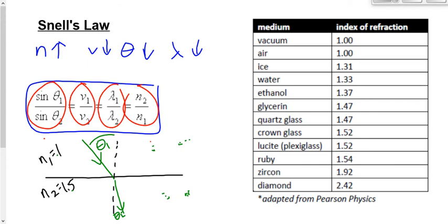Finally, there's a table of values for the index of refraction of various materials. You don't need to memorize that table — you're given only one of those indices on your data sheet. If you need another value, it will be given to you in the question, probably buried in a page of information like 'use the following information to answer the next three questions.' You don't need to memorize any of it.